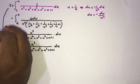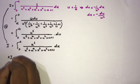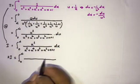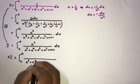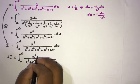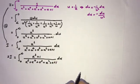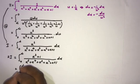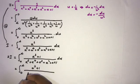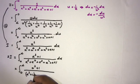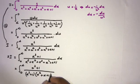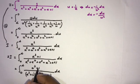Now taking the sum of the original and transformed integrals, 2I equals the integral from 0 to infinity with the same denominator. The numerator becomes x cubed plus 1. We can factor the denominator: x cubed plus 1 times x squared plus x plus 1.